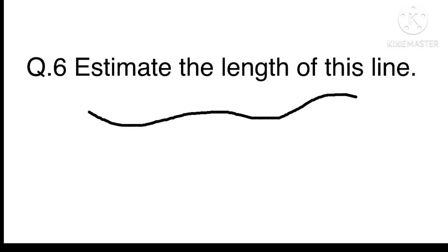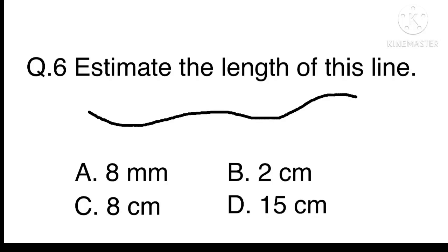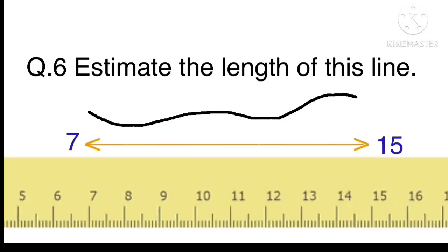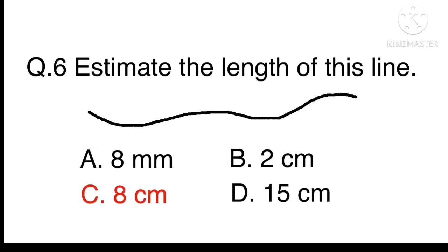Question 6. Estimate the length of this line. A. 8 millimetres B. 2 centimetres C. 8 centimetres Or D. 15 centimetres. If you put a real ruler under this line, it would be about 8 centimetres. The answer is C. 8 centimetres